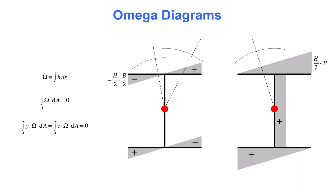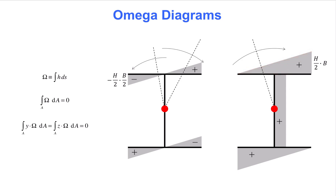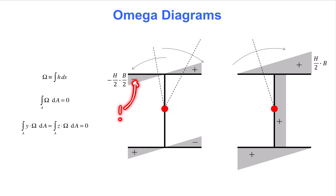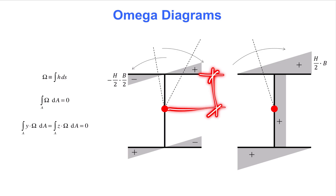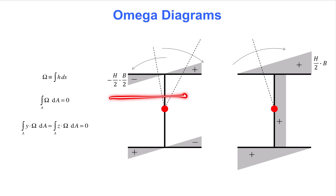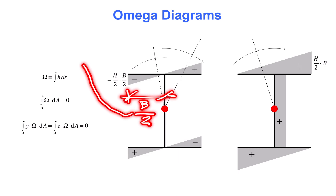One more thing to keep in mind is that we cannot have jumps, that is, discontinuities in the Omega diagram. Because the diagram gives the warping of the cross section, a discontinuity would imply a sudden jump in the axial displacement. Consider the left part of the top flange. We arbitrarily select to start with this part, starting the ray vertically and sweeping counterclockwise. The counterclockwise sweep gives a negative value. The value at the edge of the flange is h over 2 times b over 2, because the lower case h in the formula is the distance from the shear center to the tangent line of the part, which is h over 2, and b over 2 comes from integrating over half the flange width.